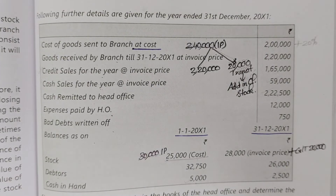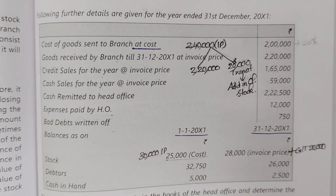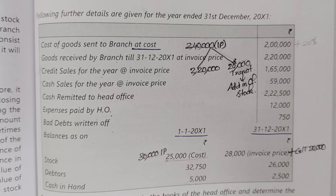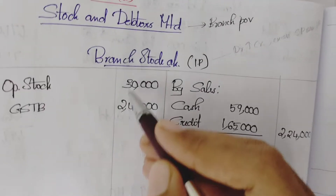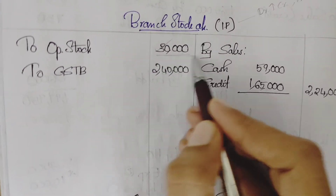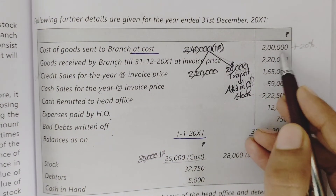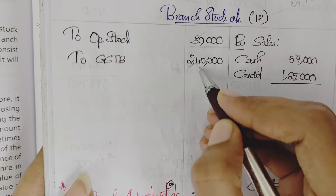The second method is the stock and debtors method — 3A is the stock and debtors method. Normally we open: branch stock account, branch debtors account, expense account, P&L account, and cash account. But in this case, because goods are sent at invoice price, an additional branch adjustment account is opened. Branch adjustment account will cancel the loading element. Opening stock at invoice price is $30,000 — loading element cancelled through branch adjustment account. Goods sent to branch: $2,20,000 plus 20% = $2,40,000, and the loading will be cancelled.